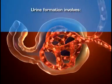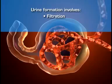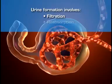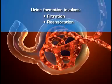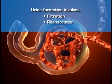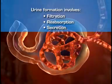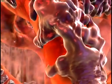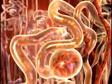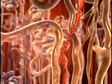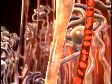Urine formation involves the filtration of the blood by the glomerulus to form an ultrafiltrate of urine, the tubular reabsorption of electrolytes and nutrients needed to maintain the constancy of the internal environment, and the secretion of waste materials. Filtration occurs as blood flows into the glomerulus from its afferent arteriole, and plasma moves through the glomerular capillaries into Bowman's space. From Bowman's space, the glomerular filtrate moves into the tubular segments of the nephron.